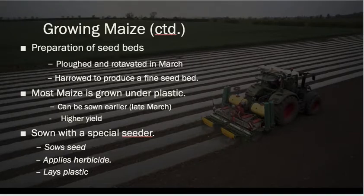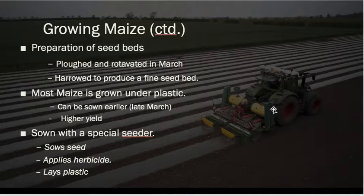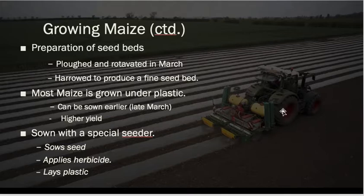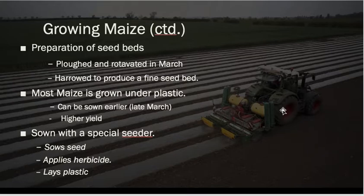For seedbed preparation, you need to plough the seedbed and rotavate it to get a nice texture in March, then harrow it to get a finer seedbed before sowing. Most maize is grown under plastic. It can be sown earlier — in March rather than waiting until April — because the plastic leads to a higher soil temperature, allowing earlier sowing. A longer growing season before harvest means a higher yield. It is sown with a precision seeder that sows the seed, applies the herbicide, and lays the plastic all in one pass.